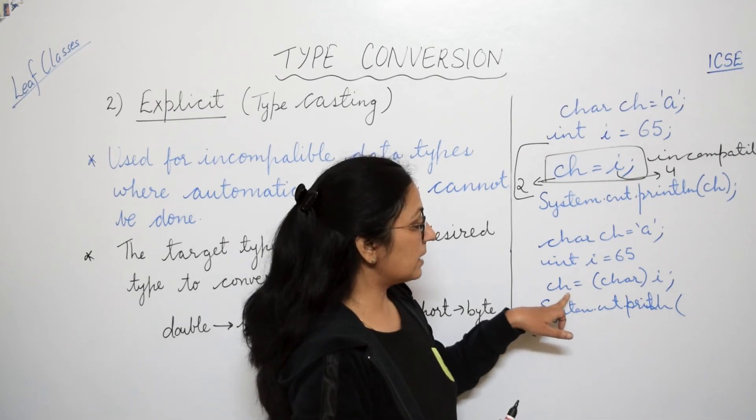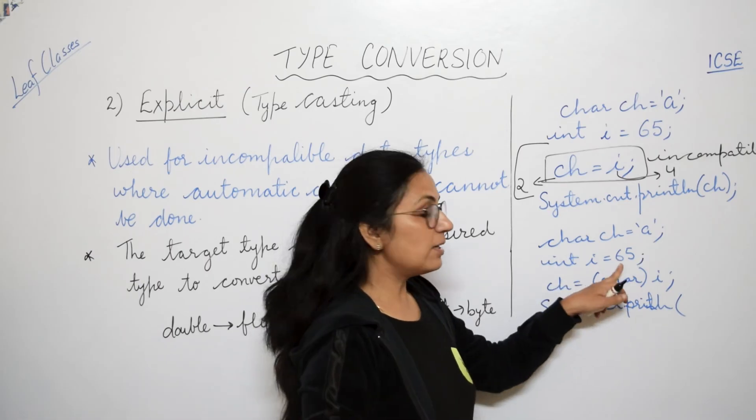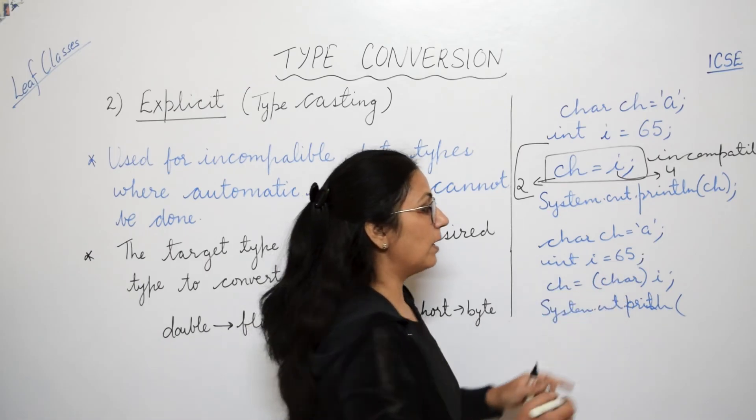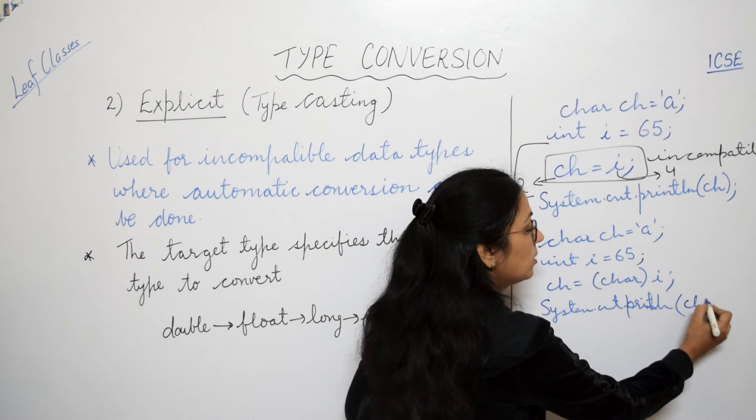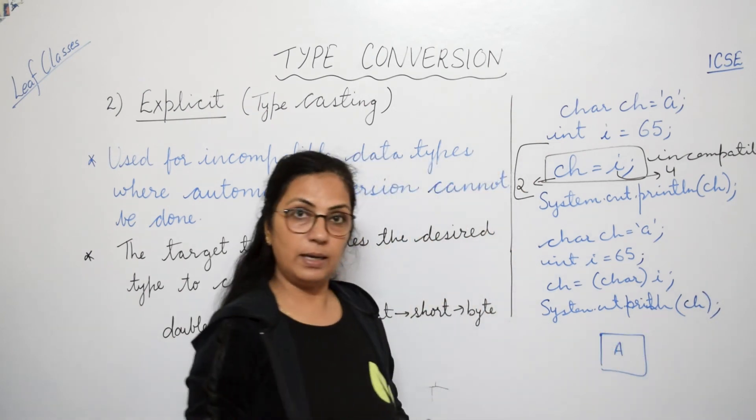And when you will print the value of i or ch over here, the output will be proper output. It will be according to the char data type. So children, when here it is converted, ch equals to char of i. i kya hai 65. And 65 ASCII code ka character value kya hota hai? Capital A. So the output will be capital A over here.